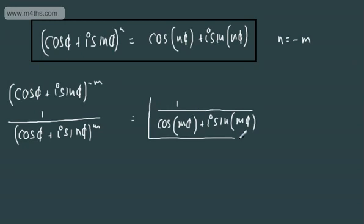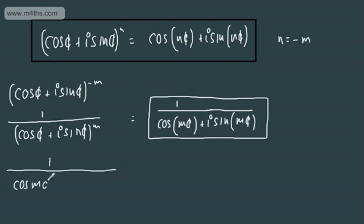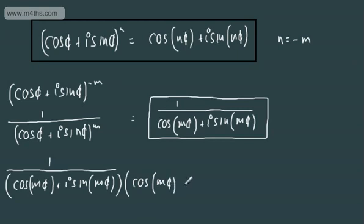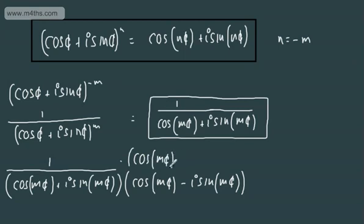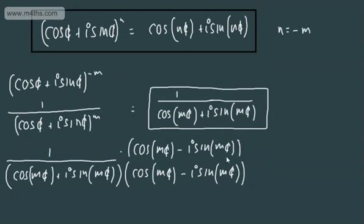What we're going to do is use some properties of complex numbers. We'll rewrite this and multiply by the complex conjugate, which is cos(mθ) minus i sin(mθ) — multiplying the top and bottom by this conjugate. This is similar to realising complex numbers as we did in FP1.